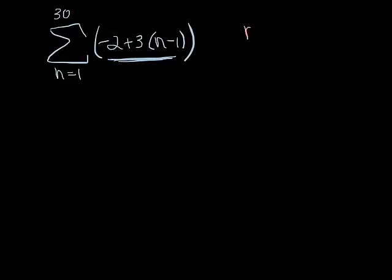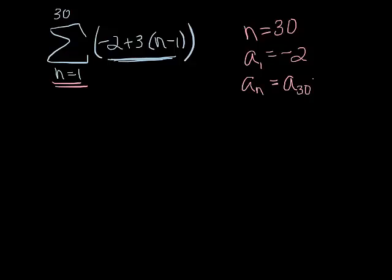So you need three things. You need the total number of terms, the term that you're starting at, and the term that you're ending at. If I'm going from term 1 to term 30 that's 30 terms. According to my explicit formula term 1 is negative 2. This a sub n is really a sub 30 because that's the term I'm stopping at. When I replace n with 30, I'm going to get 85.